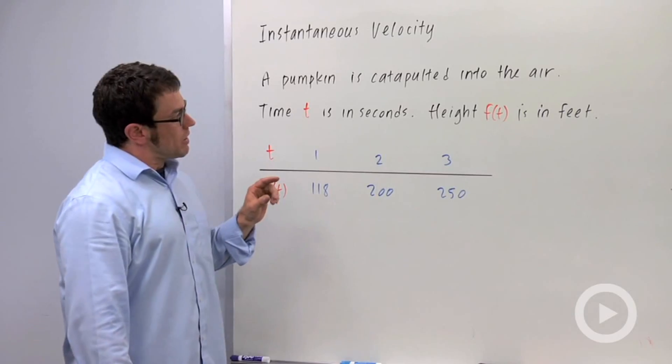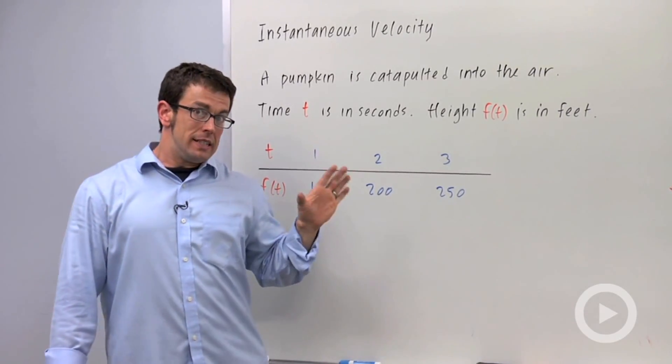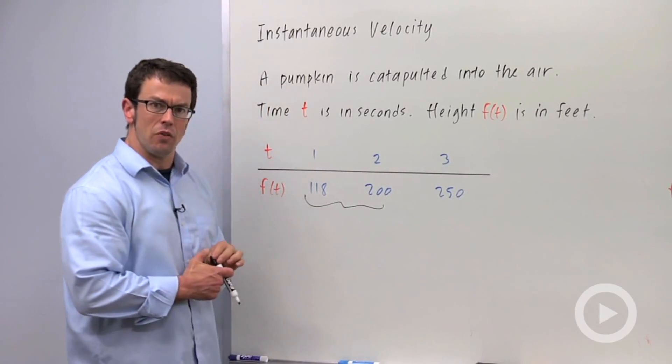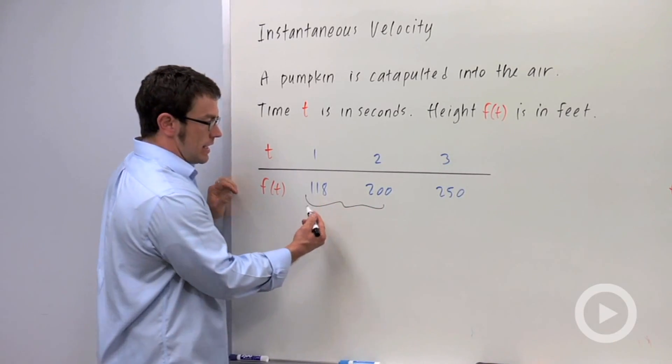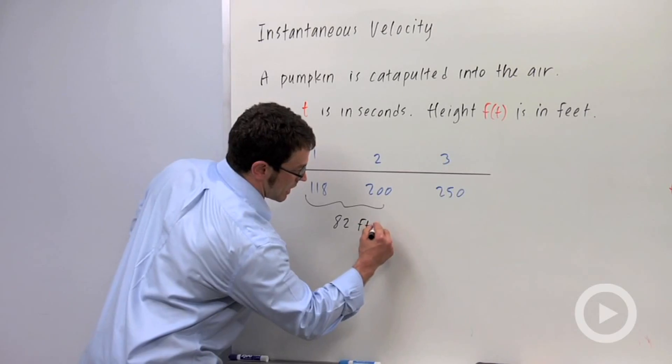Now suppose I wanted to find the instantaneous velocity at t equals zero. Well I could get a decent approximation by coming up with the average velocity over this interval here. And it would be 200 minus 118, which is 82, divided by 1. So 82 feet per second.